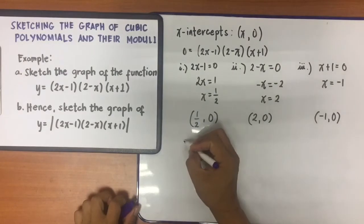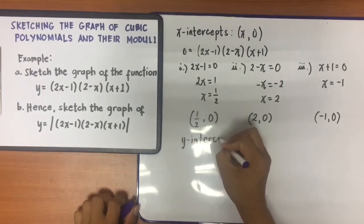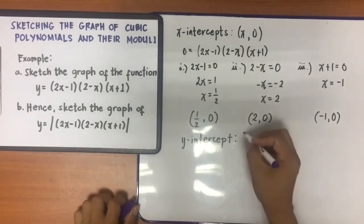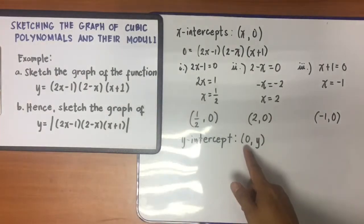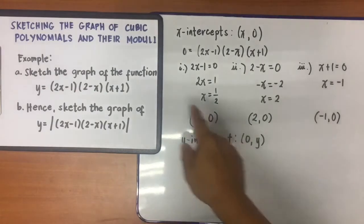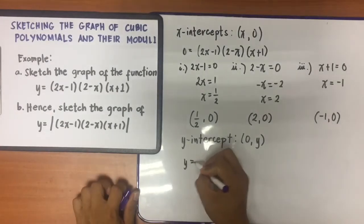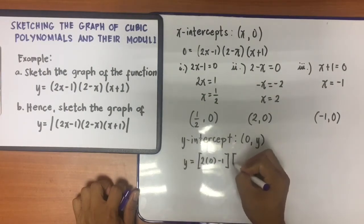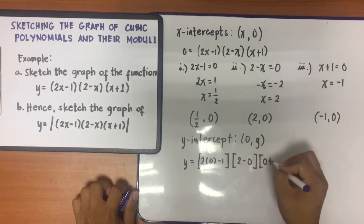Next, we need to find the y-intercepts. The y-intercept is usually written as (0, y), which means I am going to make the x value equal to 0. So the equation becomes y = (2(0) − 1)(2 − 0)(0 + 1).